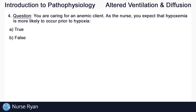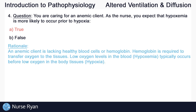Question number four. You are caring for an anemic client. As the nurse, you expect that hypoxemia is more likely to occur prior to hypoxia. The answer here is A: true. An anemic client is lacking healthy blood cells or hemoglobin. Hemoglobin is required to transfer oxygen to the tissues. Low oxygen levels in the blood — hypoxemia — typically occurs before low oxygen in the body tissues — hypoxia.